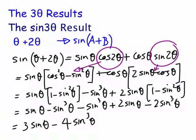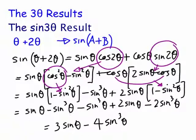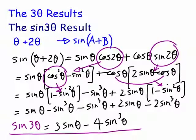When you expand all that out, I've written cos² as (1 − sin²), and I did it again on the other side of the expansion. We get a cos times a cos, giving us another sin². When you expand and simplify everything, the end result is our sin(3θ) result: three sin(θ) minus four sin³(θ).